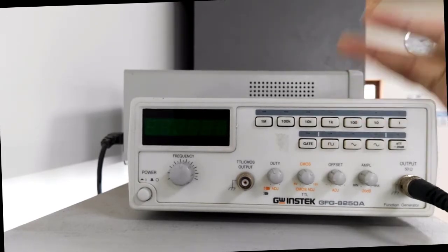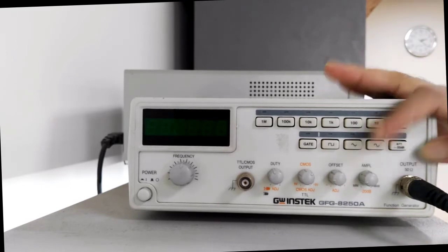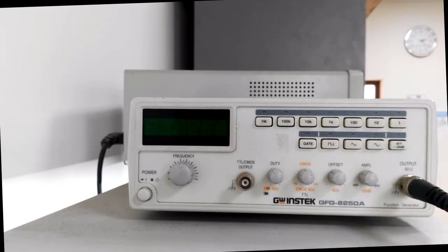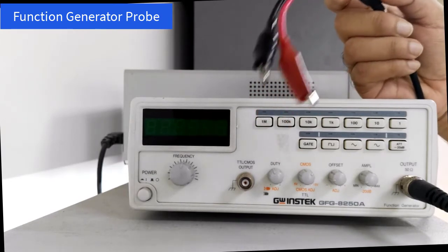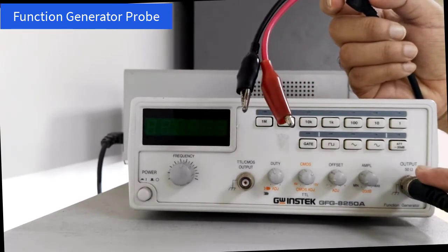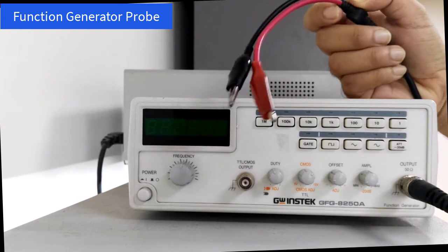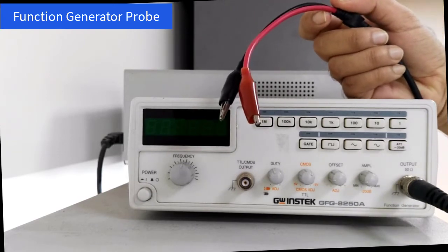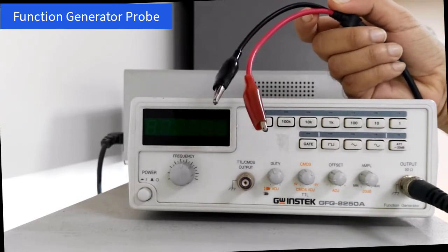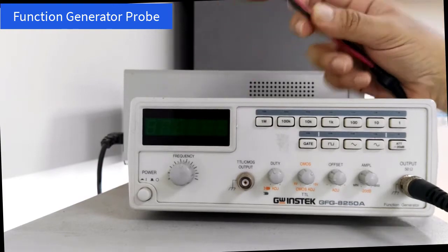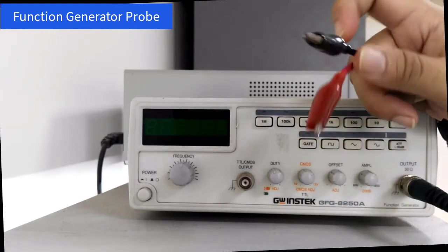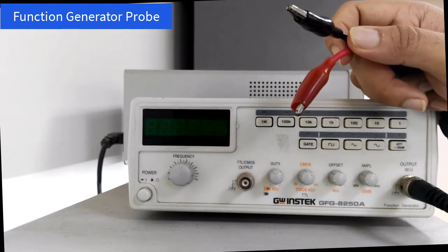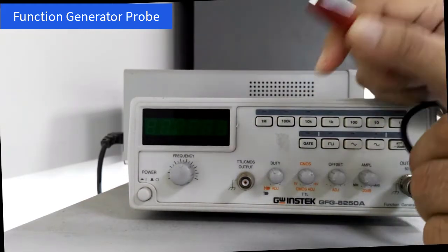This is the probe that is connected to this function generator and we will connect this to our circuit to get the required AC signals. This probe has two wires: the black wire and the red wire. From the circuit diagram, we will connect this red wire to the plus polarity and this black wire to the negative polarity.